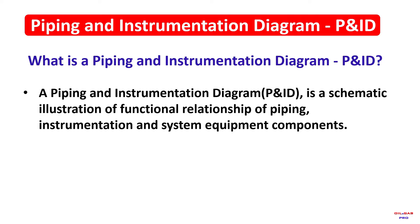A Piping and Instrumentation Diagram, P&ID, is a schematic illustration of the functional relationship of piping, instrumentation, and system equipment components.